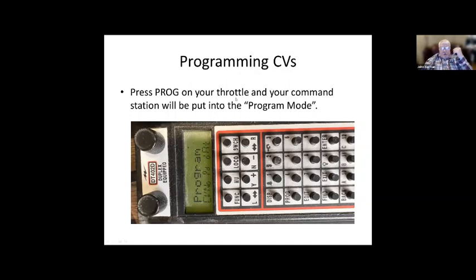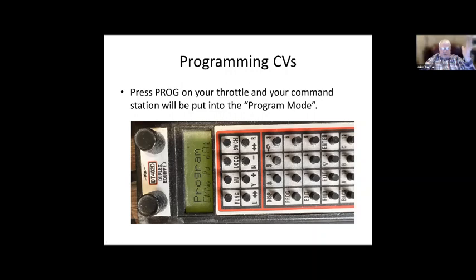Once you get that done, you'll press the program button on your throttle. This is a standard Digitrax DT402 throttle — the program button is right here if you can see my cursor. You press that and you'll get the word 'Program' on the screen, and you'll also get two letters in the middle: PD. It could be PD, PM, PX, or PL, but in most cases PD is the right one. Every time you press the program button it'll change, so you want to get it to PD in most cases.